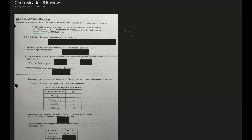So we can just use the titration equation, which is: molarity of the acid times the volume of the acid is equivalent to the molarity of the base times the volume of the base. We already know the molarity of the base, which is 0.2, and we know the volume of the base, which is 15 milliliters, and we know the volume of the acid, which is 25 milliliters.